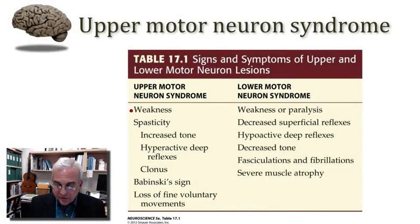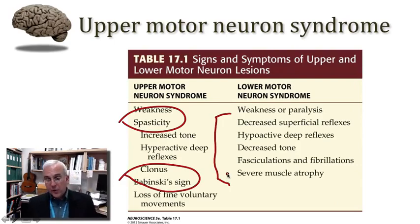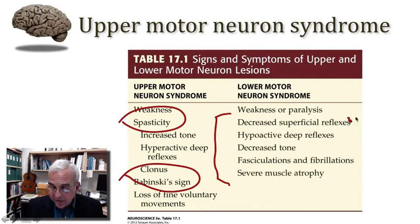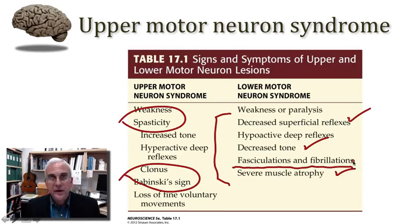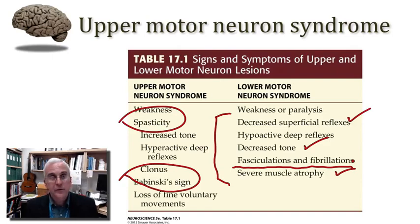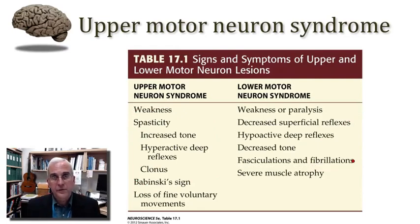I want you to appreciate how the spasticity and the special signs contrast with what we see with damage to lower motor neurons. With lower motor neuron injury, we see decreased reflexes, decreased muscle tone, and over time, muscle atrophy. In the early stages of injury, we'll see abnormal activity of muscle fibers in motor units that we call fasciculations and fibrillations. With upper motor neuron injuries, we tend not to see such a loss of muscle structure and integrity.